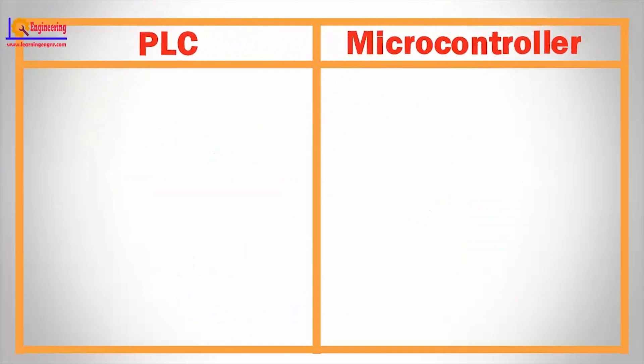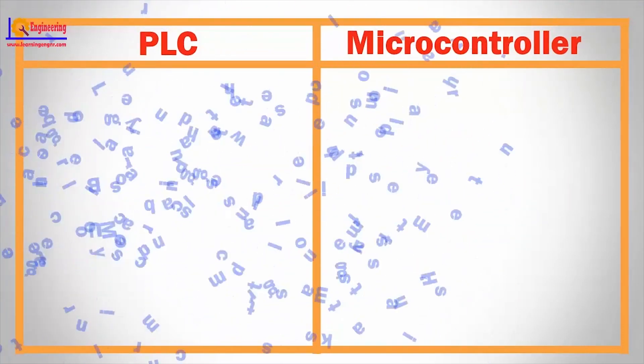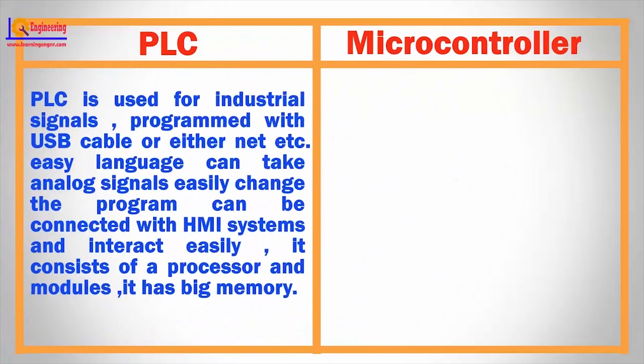Let's start with the differences between PLC and microcontroller. PLC is used for industrial signals, programmed with USB cable or Ethernet, etc. Easy language can take analog signals easily, hence the program can be connected with HMI systems and interact easily. It consists of a processor and modules, and it has big memory.